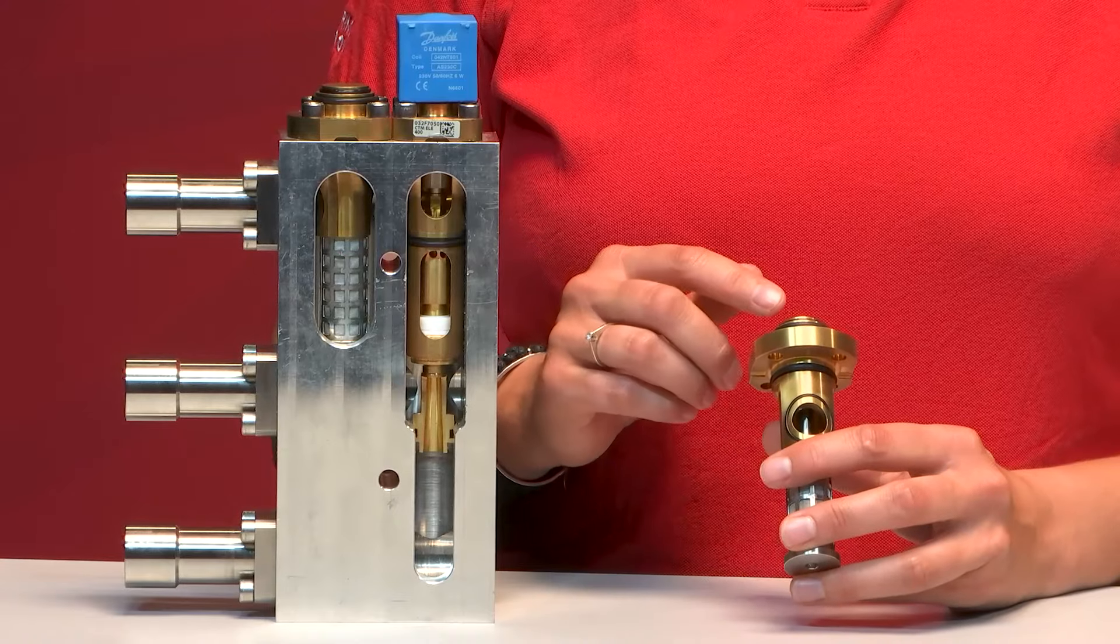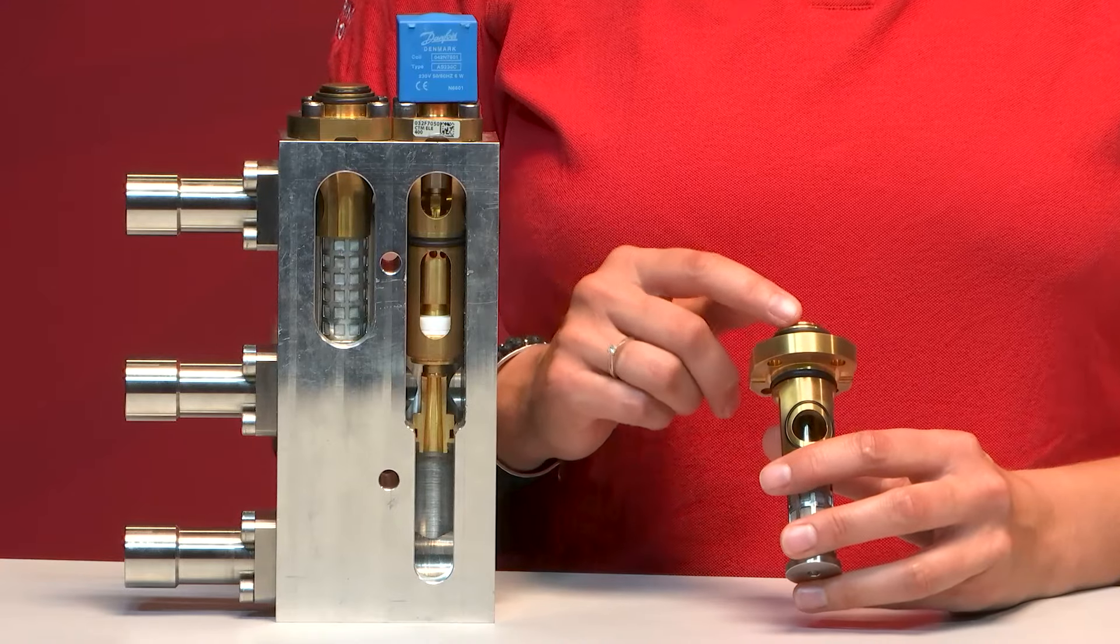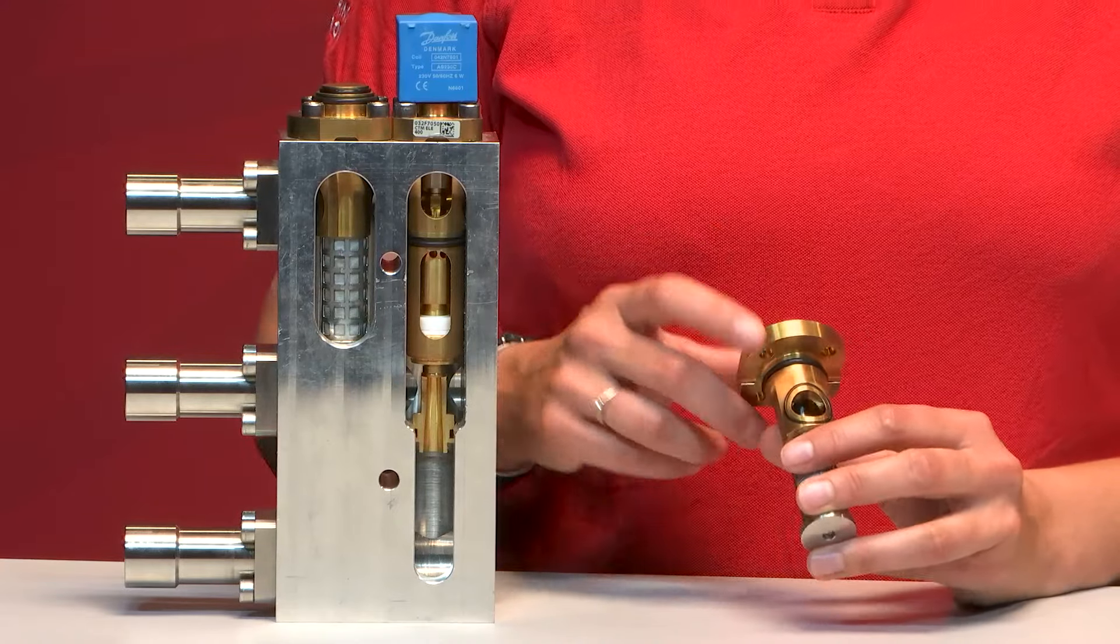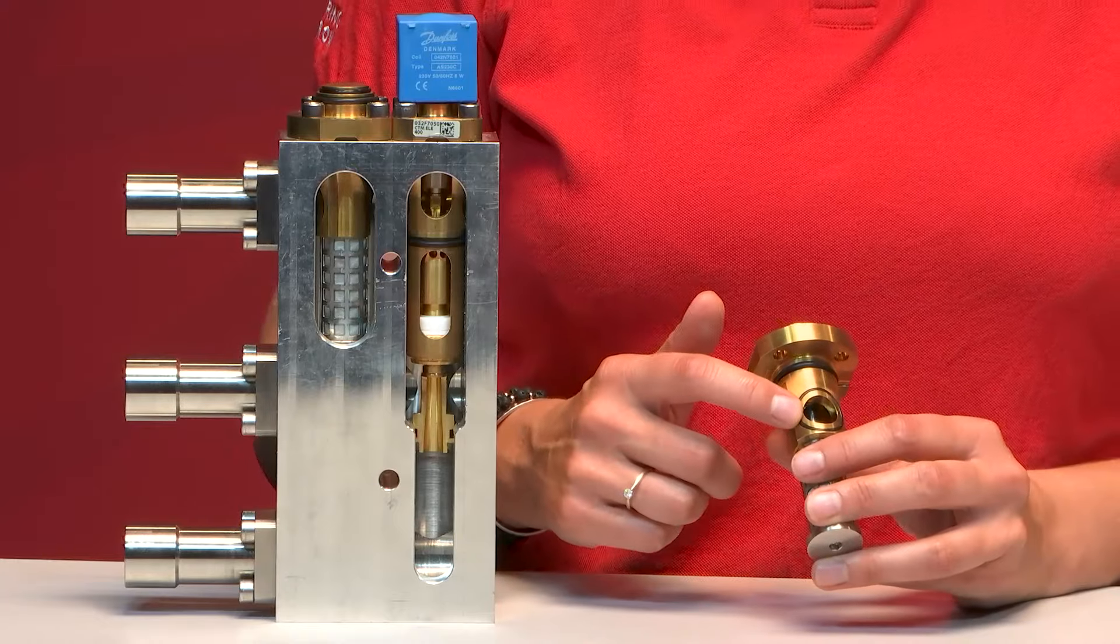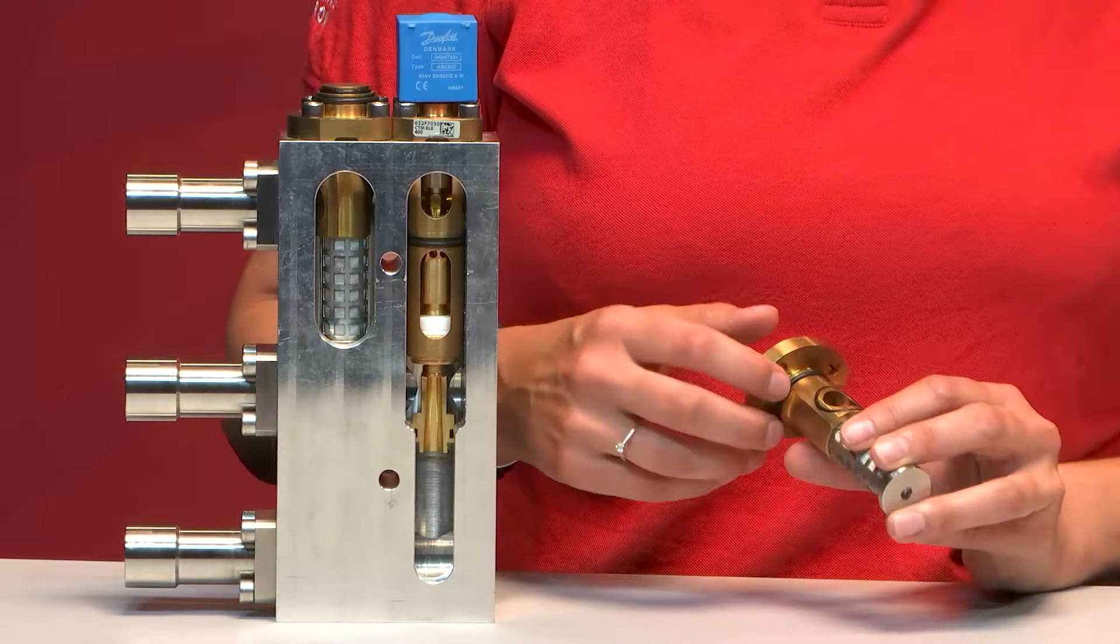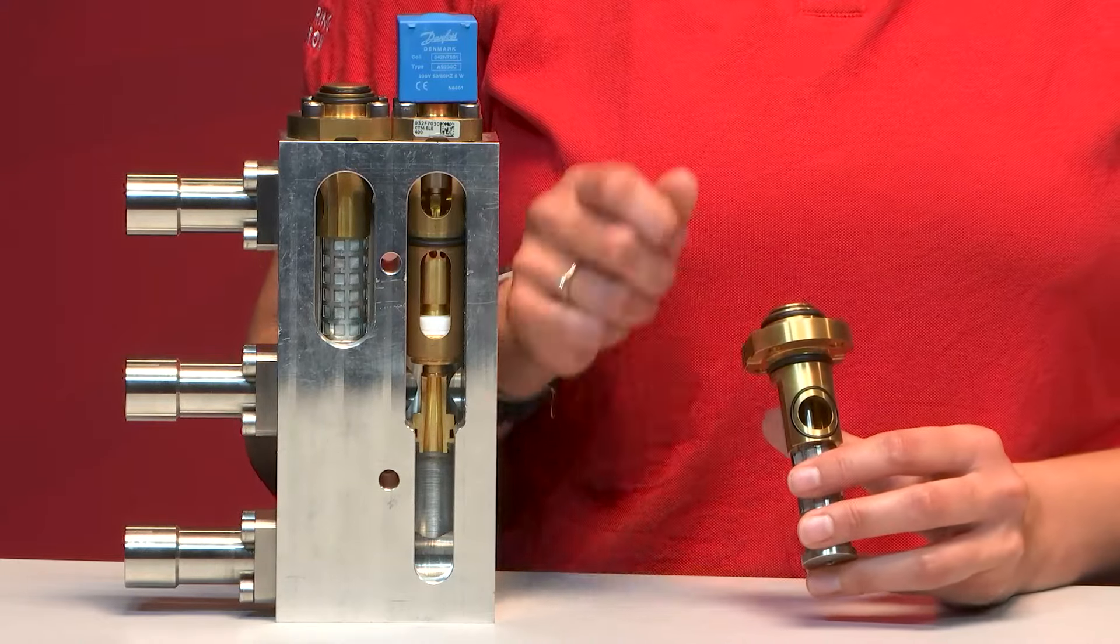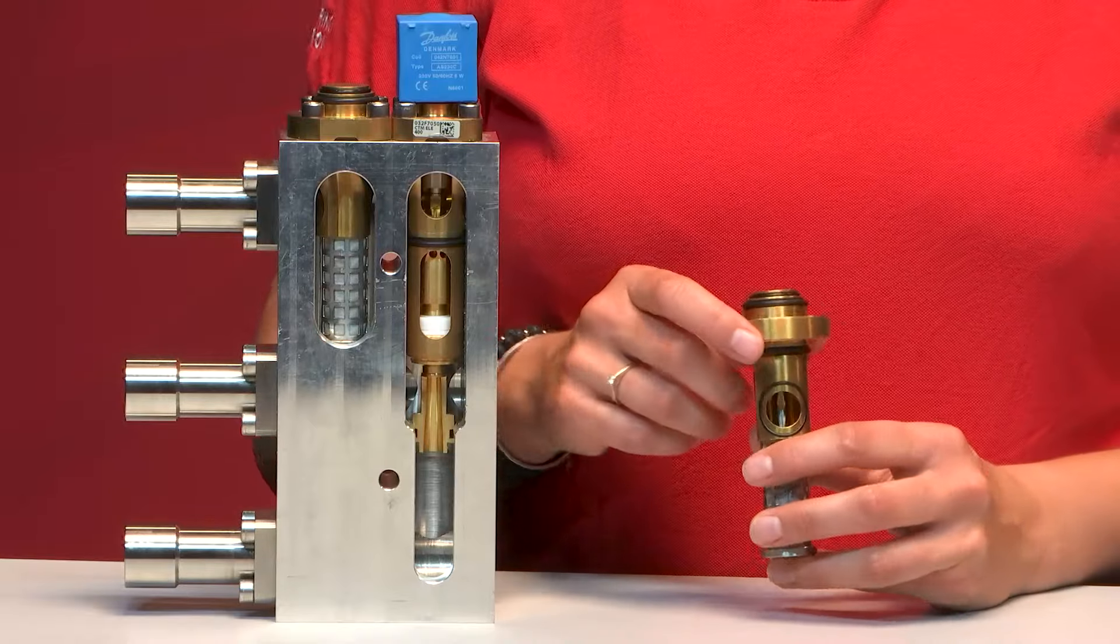Therefore, we suggest that you, in a service situation, use the two O-rings we have here. The smallest O-ring you put here for the outlet, the bigger O-ring you put up here for the connection to the ejector block.